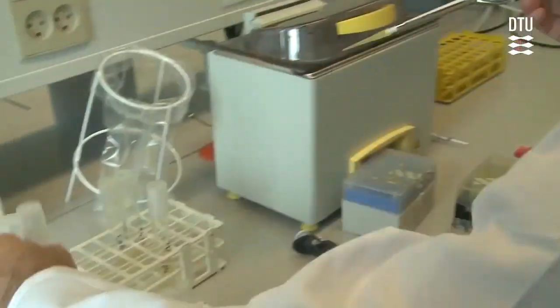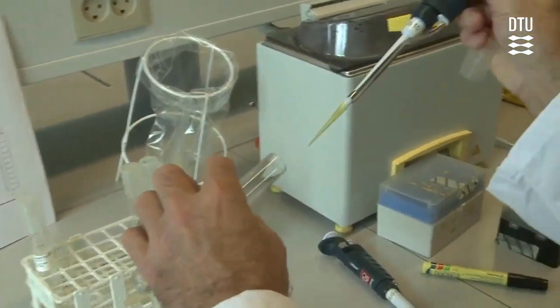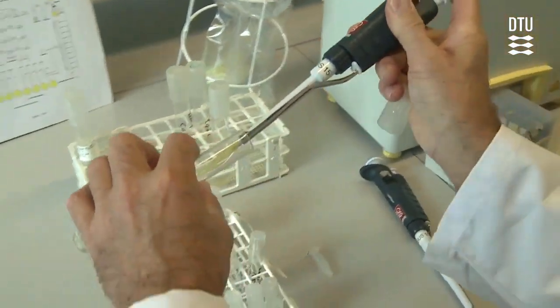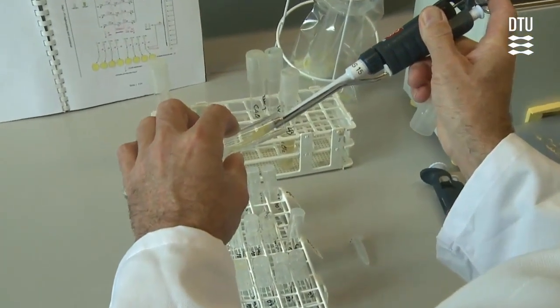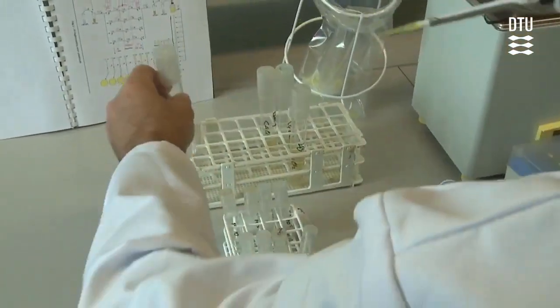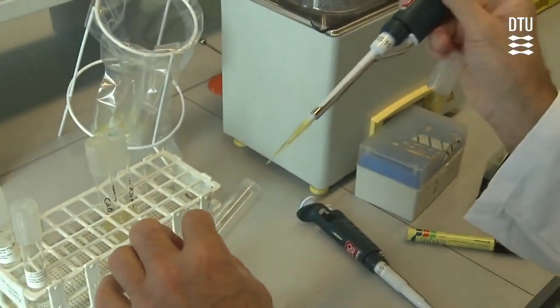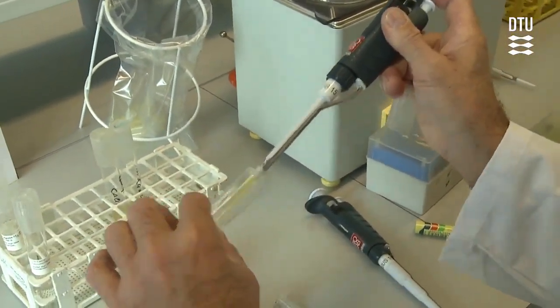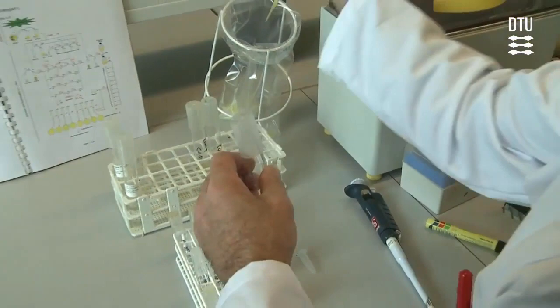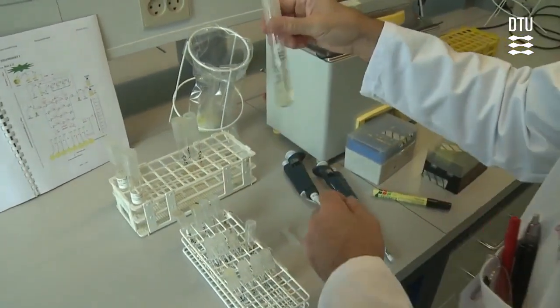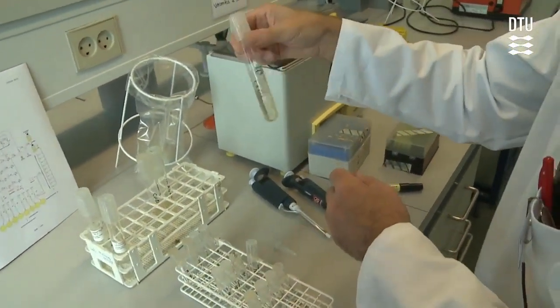For dilution of the phages, we need LB with calcium chloride. So we transfer the appropriate amount of calcium to the tube with LB medium. And after that, you shake it a bit. You can use your hands or you can use your vortex if you want to.